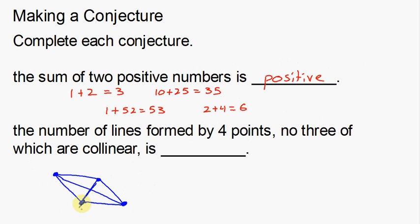I can't really make any more lines from the last point — those lines are already made. So let's count them all: one, two, three, four, five, and six. The number of lines formed by four points, no three of which are collinear, is six lines.